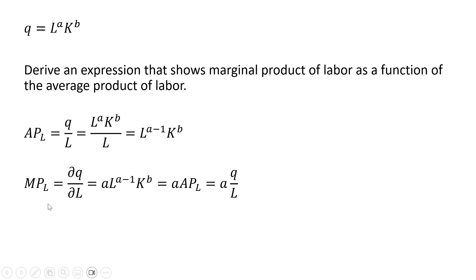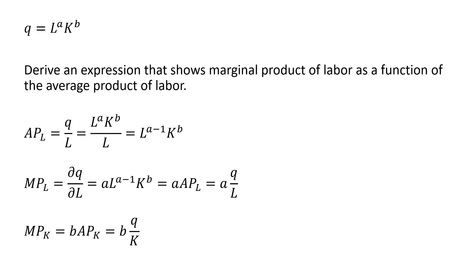So therefore we do have an expression showing that the marginal product of labor is a function of the average product of labor. We can do a similar thing for the marginal product of capital. The marginal product of capital we can simplify down to the exponent on the K term in the production function, all multiplied by the average product of capital, Q divided by K.